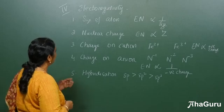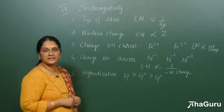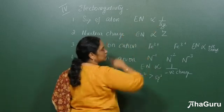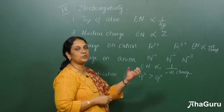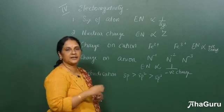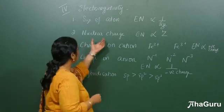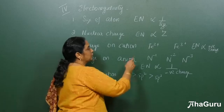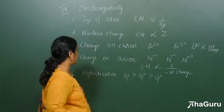Now let us see how electronegativity depends on various parameters. The first parameter is the size of the atom — electronegativity is inversely proportional to the size, so the smaller the atom, the more electronegative it is. That is why fluorine is the most electronegative in a period. The second parameter is nuclear charge — when the nuclear charge is higher, the electronegativity will also be higher.